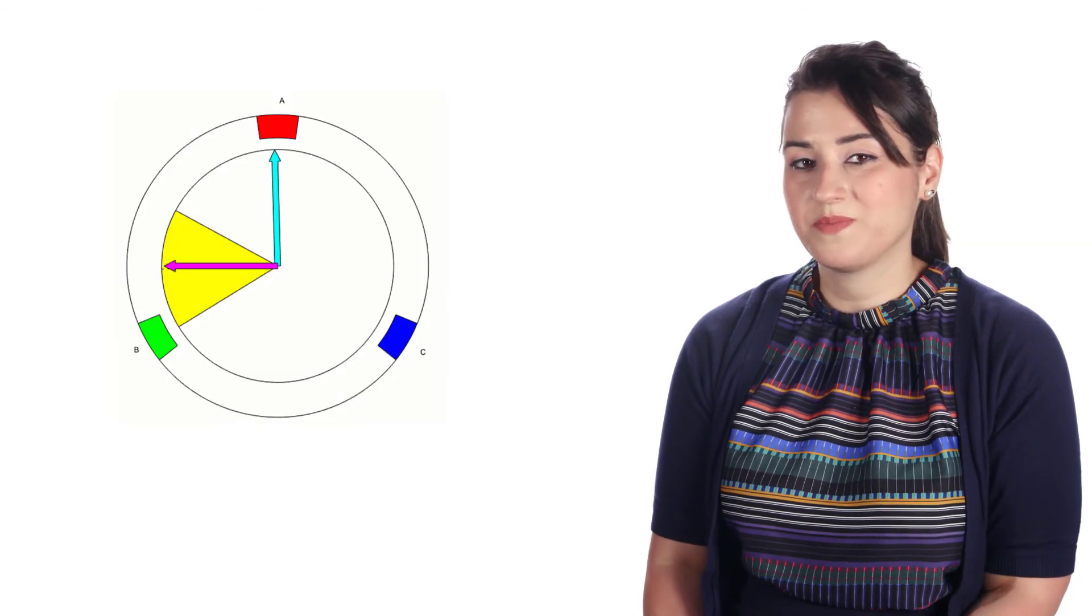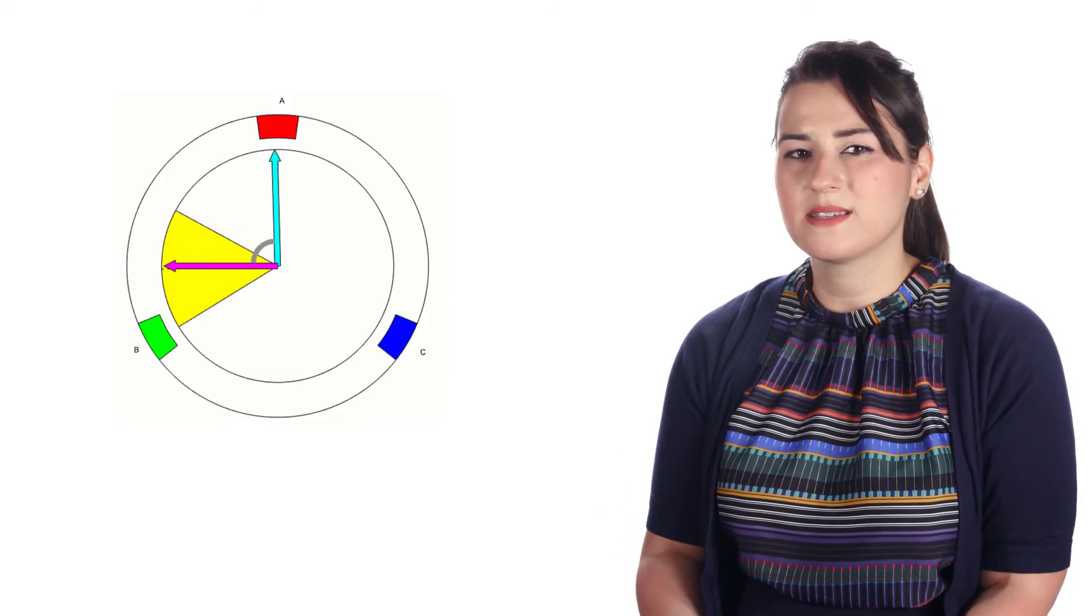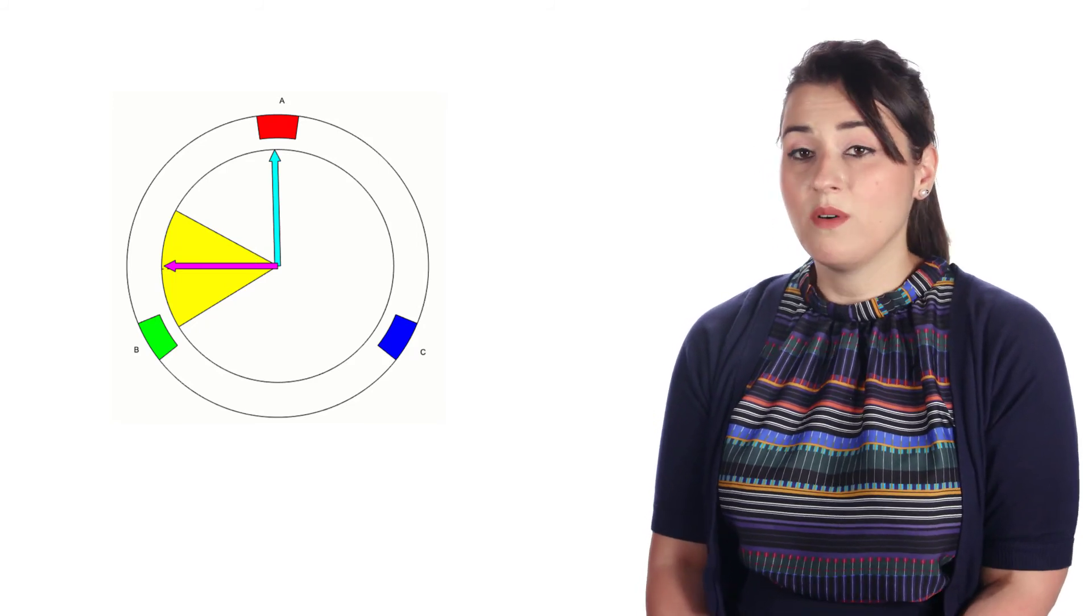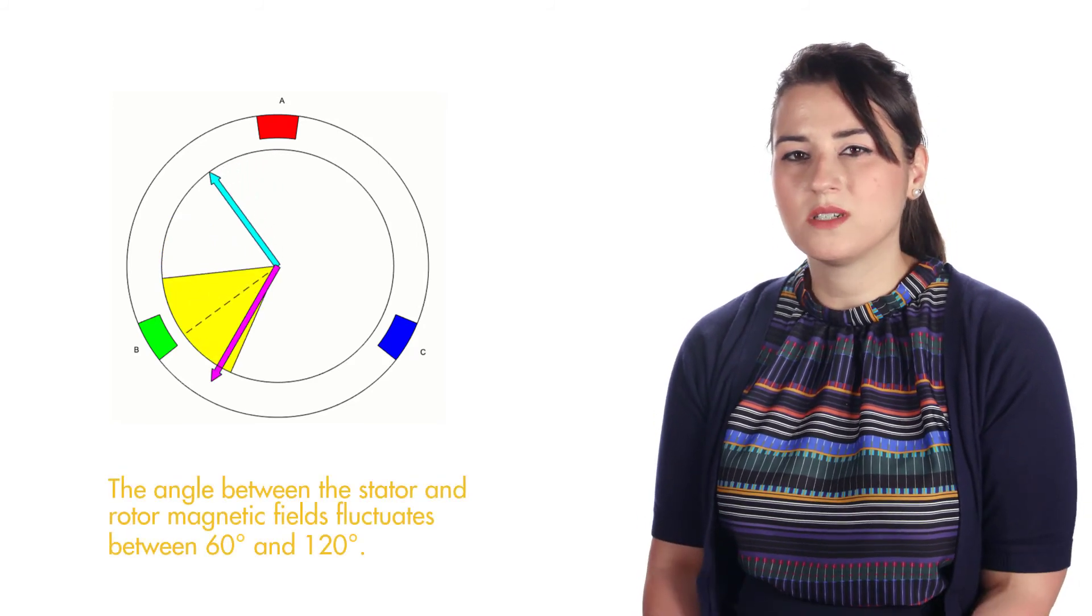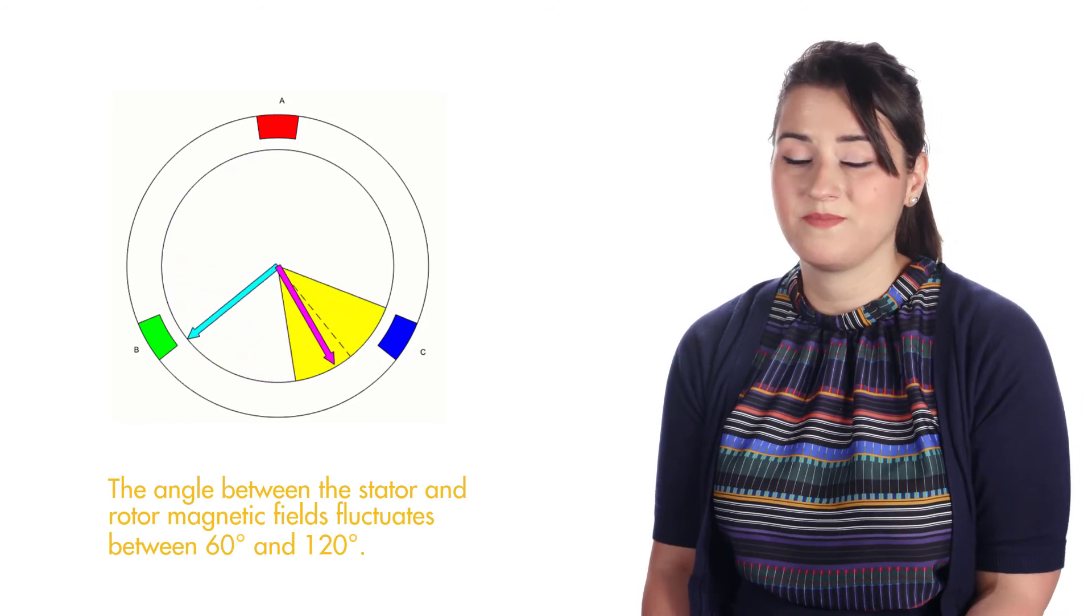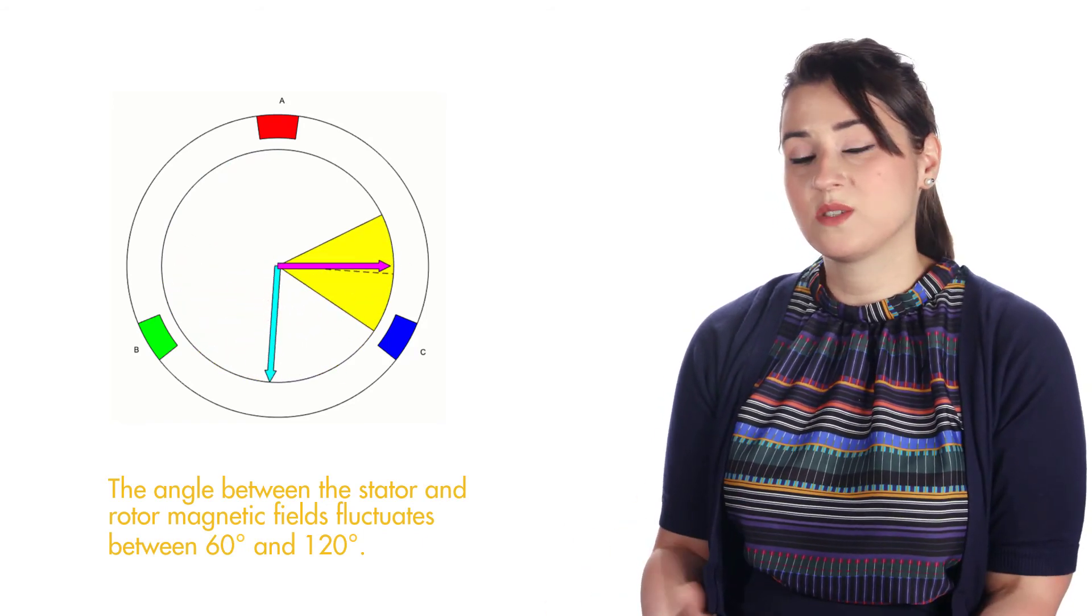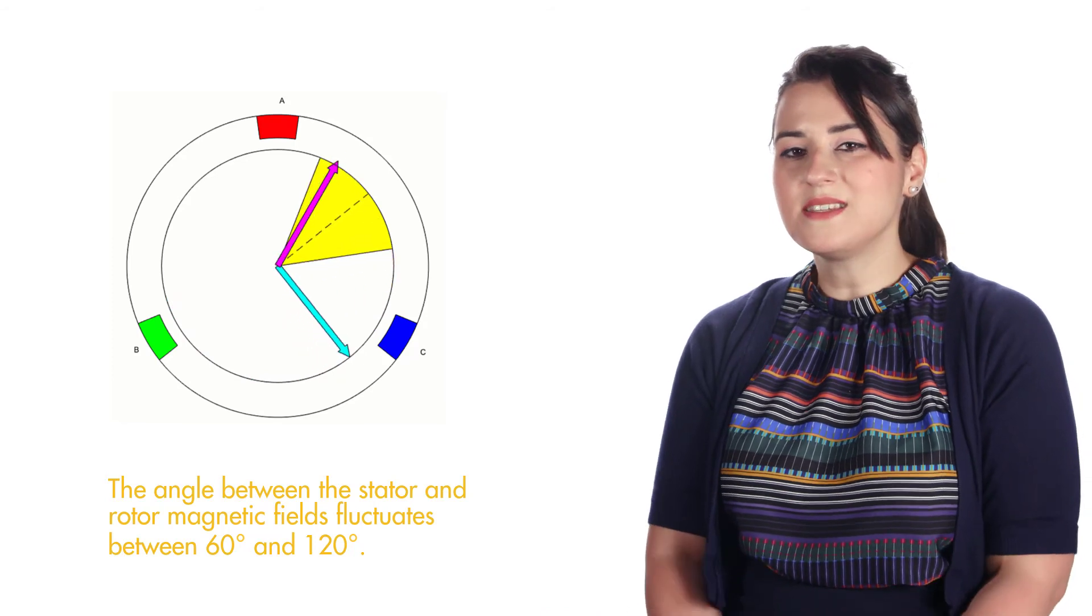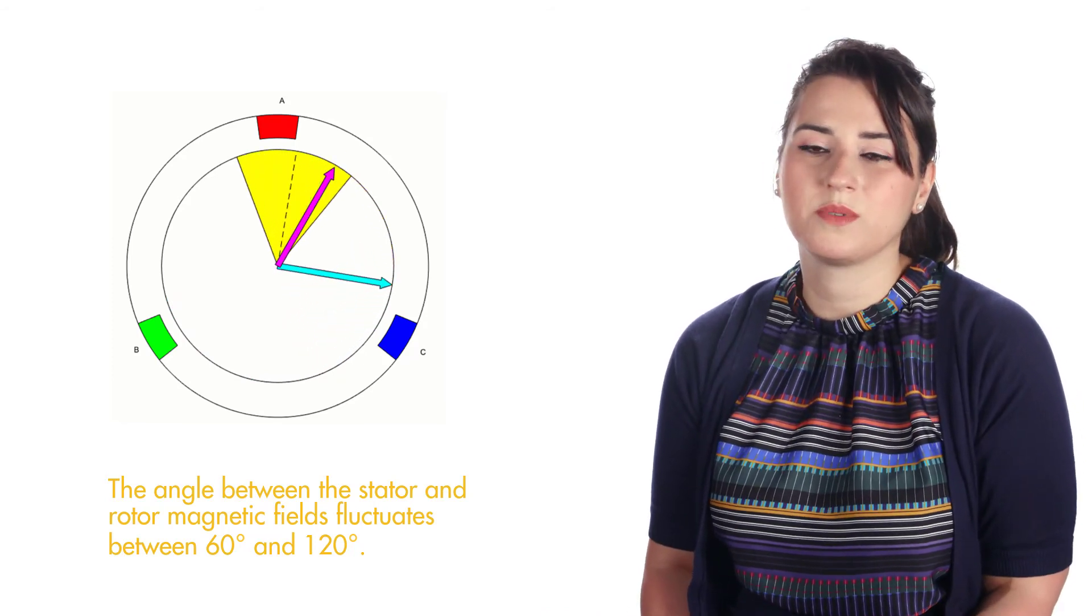Second, maximum torque occurs when the fields are at 90 degrees to each other, so the goal is to bring this angle close to 90 degrees. However, in BLDC motors, we never achieve 90 degrees with six-step commutation, but the angle fluctuates within some range, and this is due to the simple nature of the trapezoidal control.